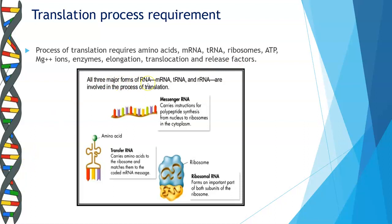All three major forms of RNA — mRNA, tRNA, and rRNA — are involved in the process of translation. Messenger RNA carries instructions for polypeptide synthesis from the nucleus to the ribosome in the cytoplasm. Transfer RNA carries amino acids to the ribosome and matches them with the coded mRNA message. Ribosomal RNA forms an important part of both subunits of the ribosome.